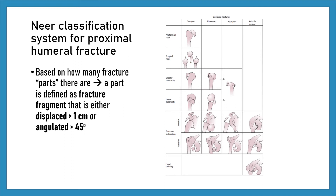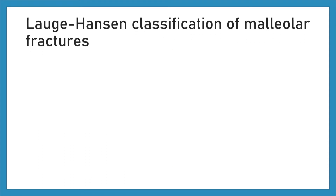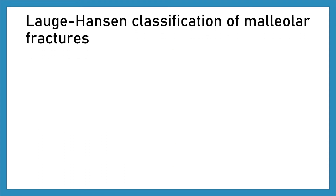Two-part fractures in the Neer system can represent either a fracture across the surgical neck of the humerus, or a greater or lesser tuberosity fracture that is displaced. Three-part fractures classically involve the humeral head with a greater tuberosity fragment that is displaced or angulated. Four-part fractures involve displacement or angulation of the humeral head and both the greater and lesser tuberosities.